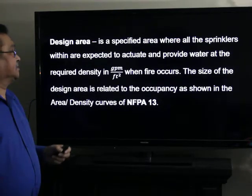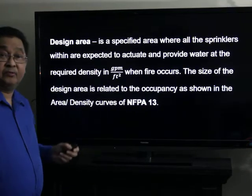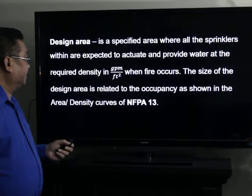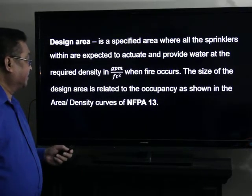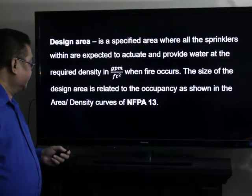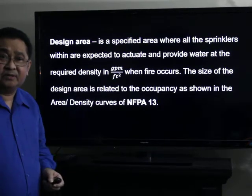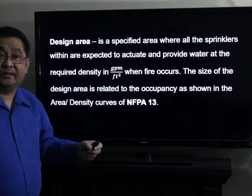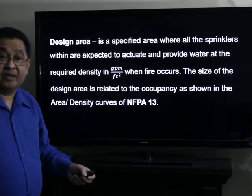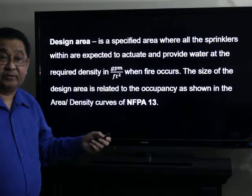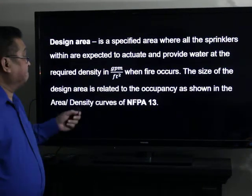So, the design area, what is the design area? It is a specified area where all the sprinklers within are expected to actuate and provide water at the required density in gallons per minute per square foot when fire occurs. The size of the design area is related to the occupancy as shown in the area density curves of NFPA 13. Because when fire occurs, it's not the whole building that suddenly sets on fire. It's just a small portion of the building. So we assume a remote area, the most remote area, wherein all the sprinklers in that remote area provide the water at the required GPM per square feet.